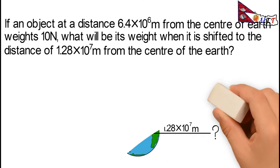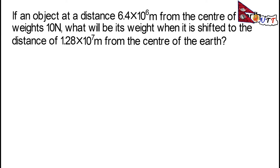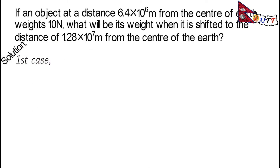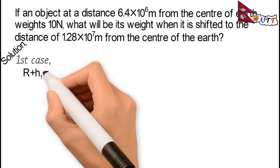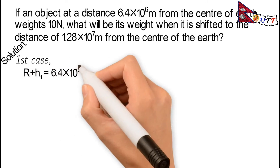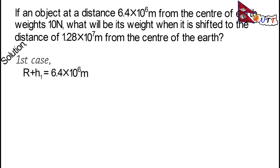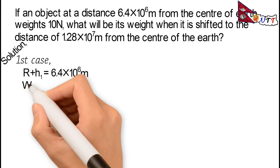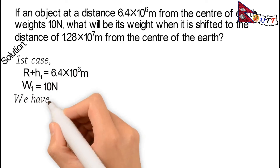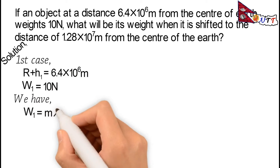Now let's understand the solution with two cases. First case: r + h₁ is equal to 6.4 × 10⁶ meters. Here r plus h₁ represents the distance from the center — that is, the radius plus the height above the surface.